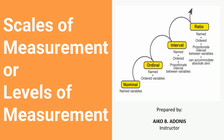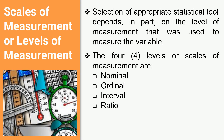Selection of an appropriate statistical tool depends in part on the level or scale of measurement that was used to measure the variable. These four levels of measurement will help you in determining what statistical tool to use in your research study, thesis, or dissertation. The four levels or scales of measurement are nominal, ordinal, interval, and ratio level. Let's discuss them one by one.